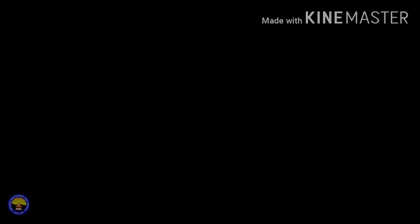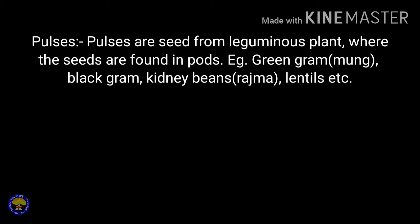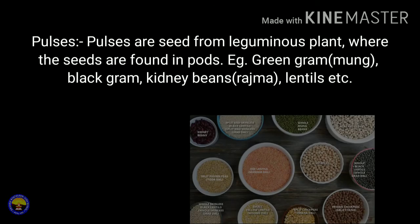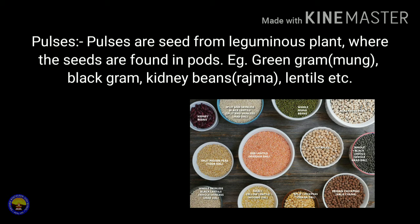Now, pulses. Pulses are the seeds obtained from leguminous plants, where the seeds are found in pods. Examples of pulses are green gram (i.e. mug dal), black gram, kidney bean (i.e. rajma), lentils, etc.